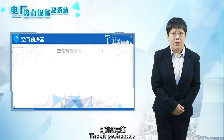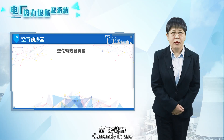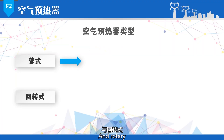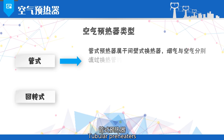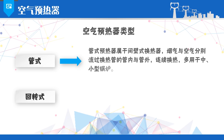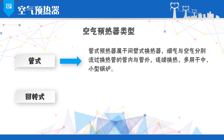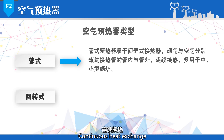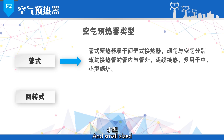The air preheaters currently in use are mainly tubular and rotary. Tubular preheaters belong to barrier heat exchangers. Air and flue gas flow through the inside and outside of the heat exchanging tubes, respectively, for continuous heat exchanging. They are mainly used in medium and small sized boilers.